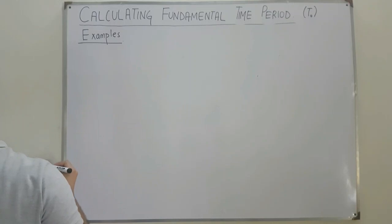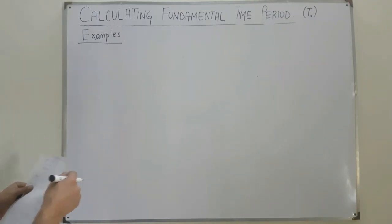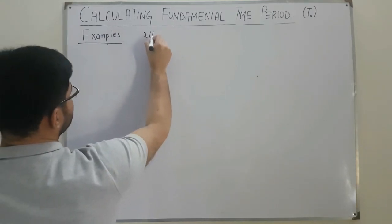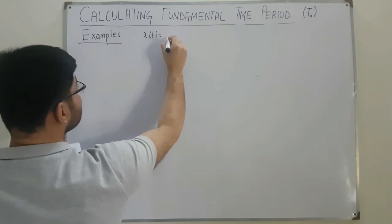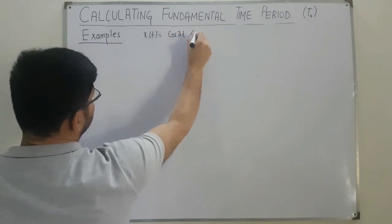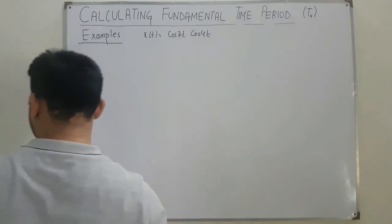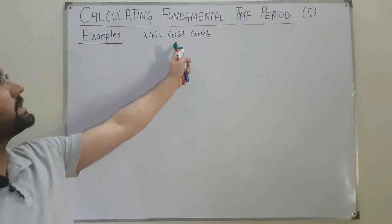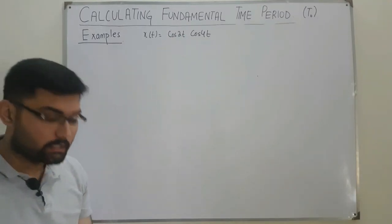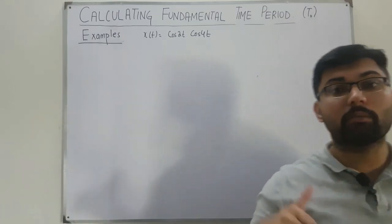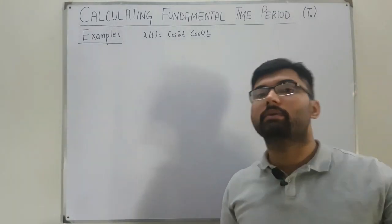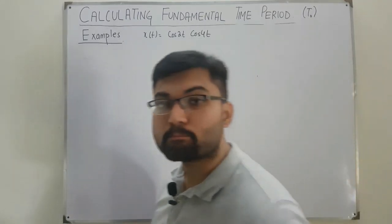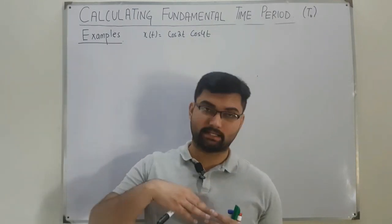The first example: the signal x(t) = cos(2t) · cos(4t). Now, when we have the function in product form, we cannot predict whether it is periodic or aperiodic, and we cannot calculate the time period directly from the product form. So we need to convert it into another form.